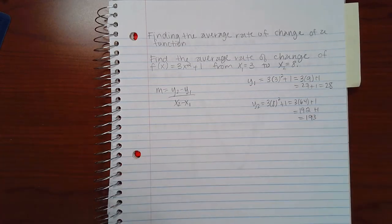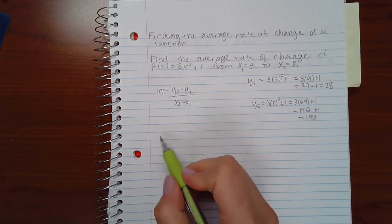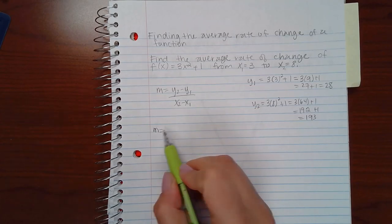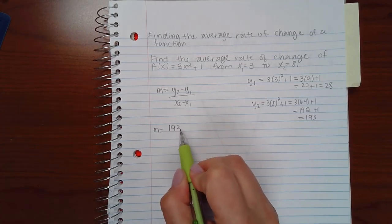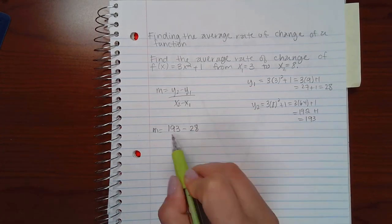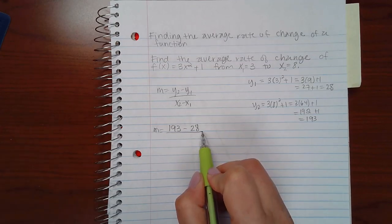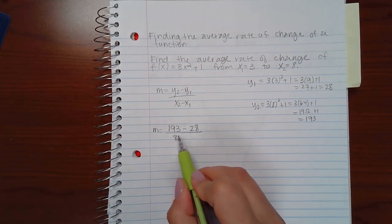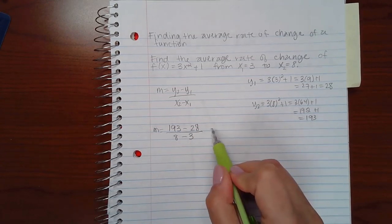Then we plug it into the slope formula to find the average rate of change. So we get the y2 value minus the y1 value over the x2 value minus the x1 value.